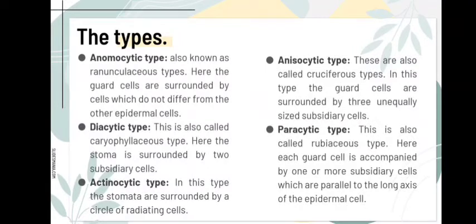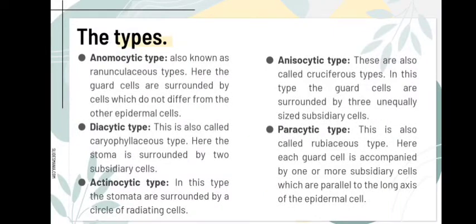In the anomocytic type, the surrounding epidermal cells do not differ from other epidermal cells. In the actinocytic type, the stomata are surrounded by radially arranged cells. In the anisocytic type, the guard cells are surrounded by three subsidiary cells. In the paracytic type, the subsidiary cells can be more than one and the epidermal cells run parallel to the guard cells.